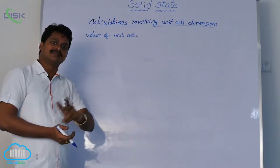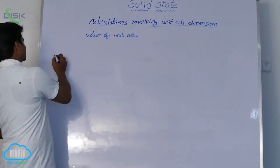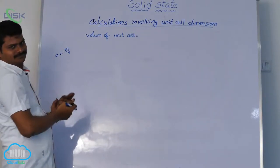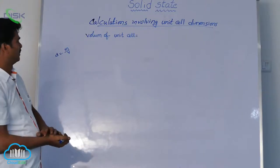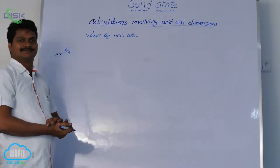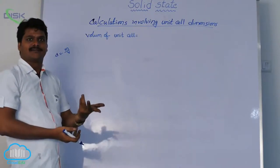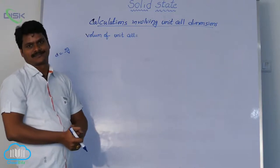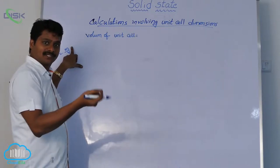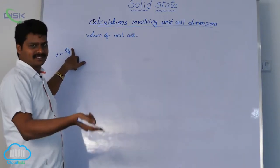How are volume and density related? We have the formula: density is equal to mass divided by volume. The mass here is the mass of the unit cell. Mass of the unit cell is determined using the number of effective atoms in that unit cell multiplied by the mass of each atom.